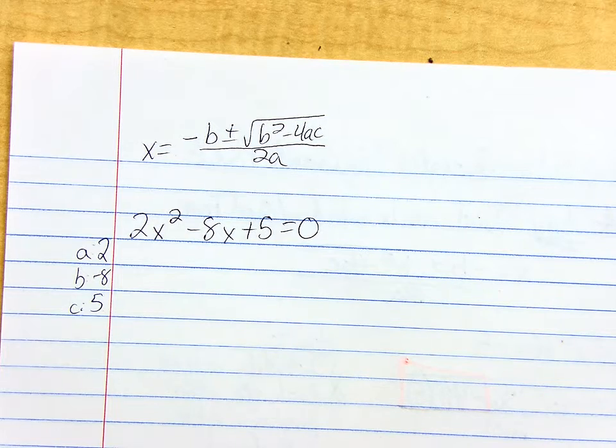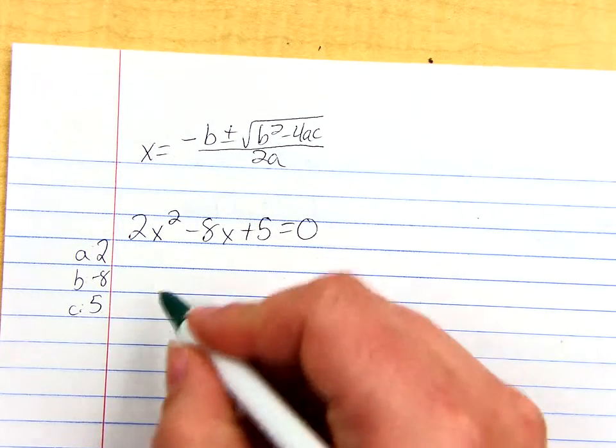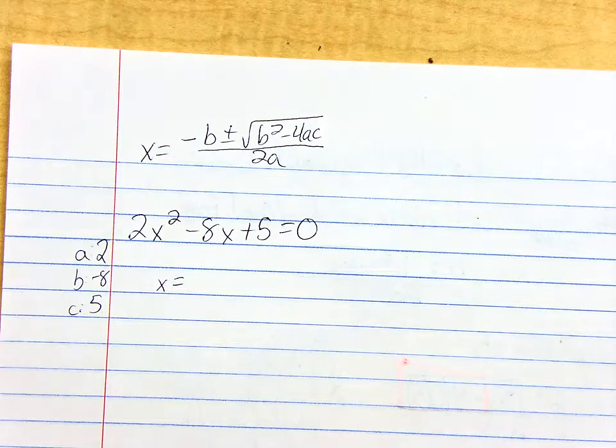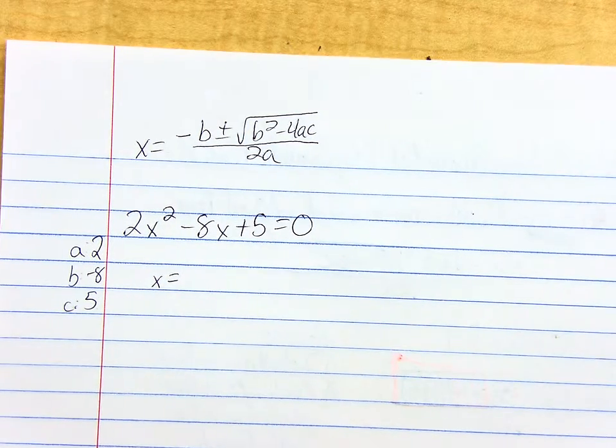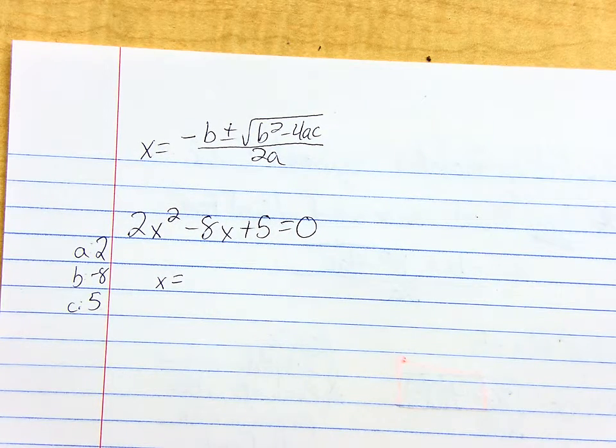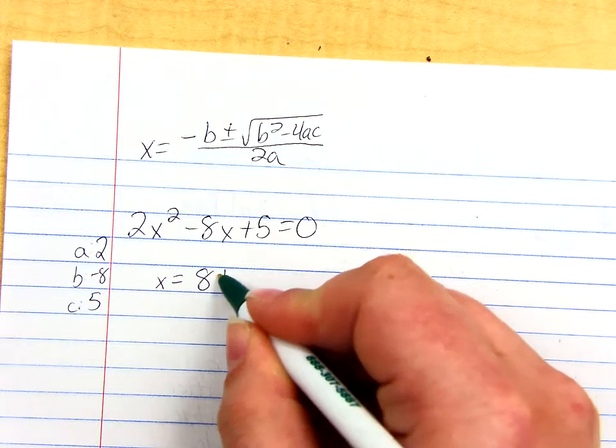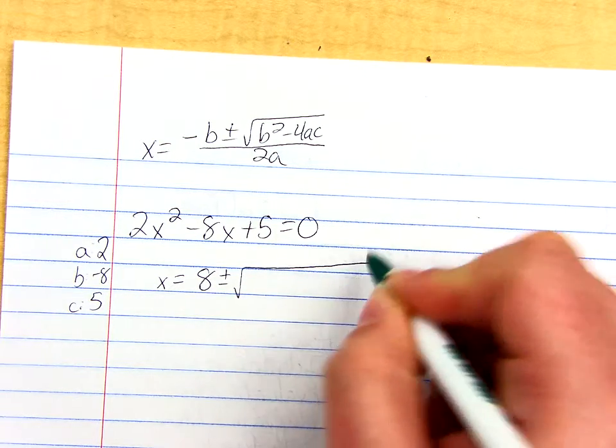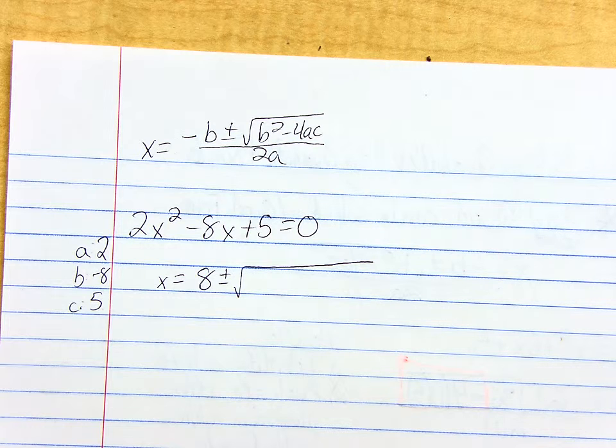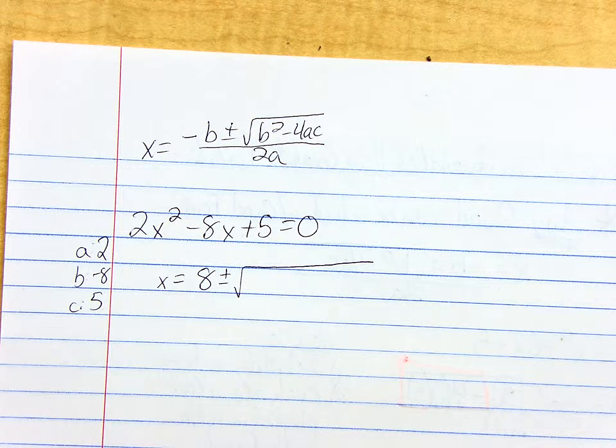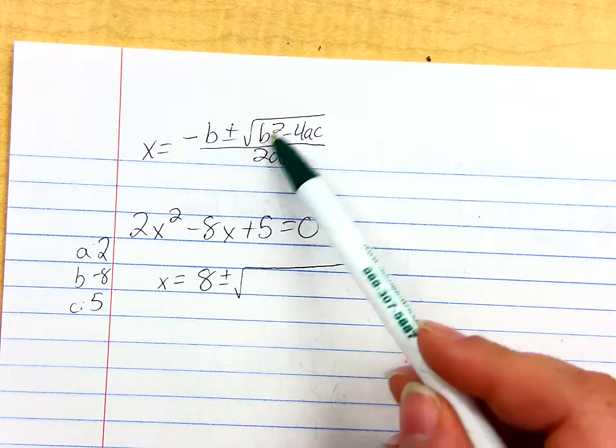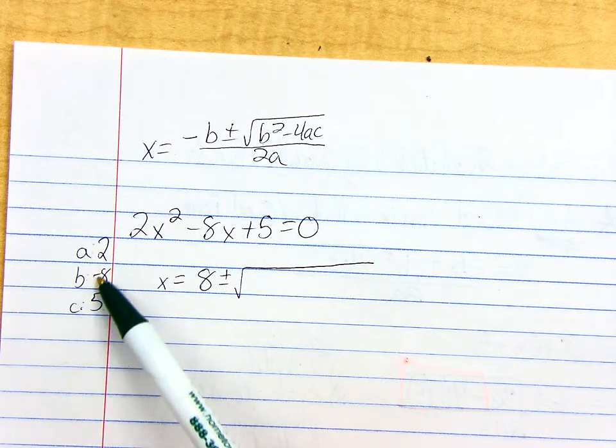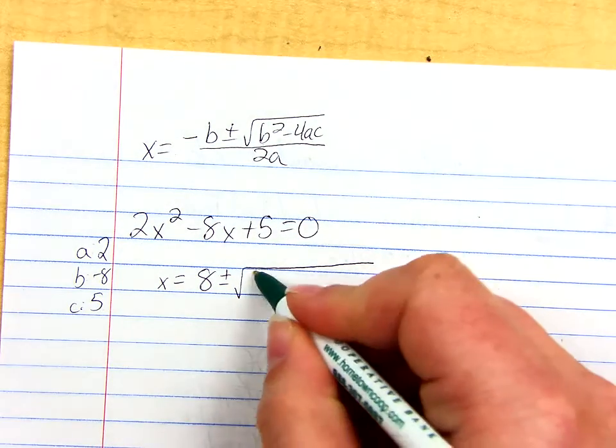And now we just plug them into the formula and evaluate correctly. So we've got x equals, I want negative B. So what does that make it now? Positive 8. Plus and minus the square root. Now I want B squared. 64. Is everyone okay that it's going to be a positive 64? I want to take whatever B is and square it. In this case, B is negative 8, so negative 8 times negative 8 really is a positive 64.